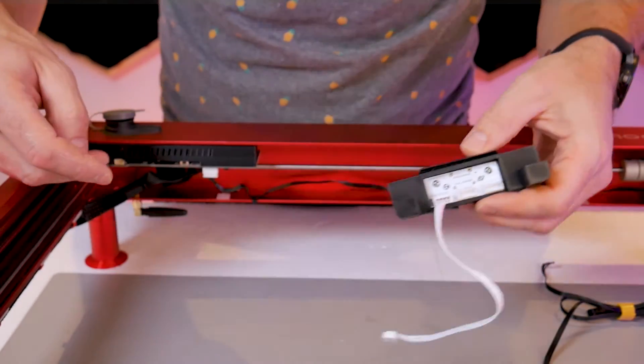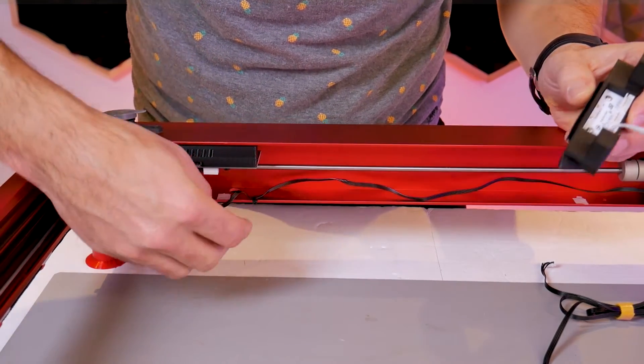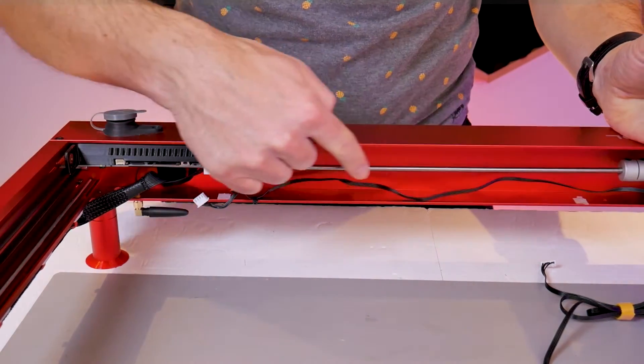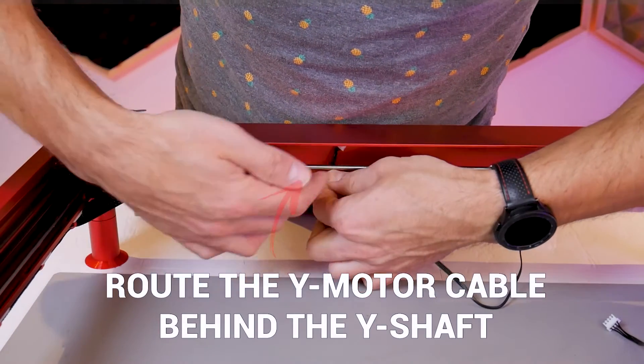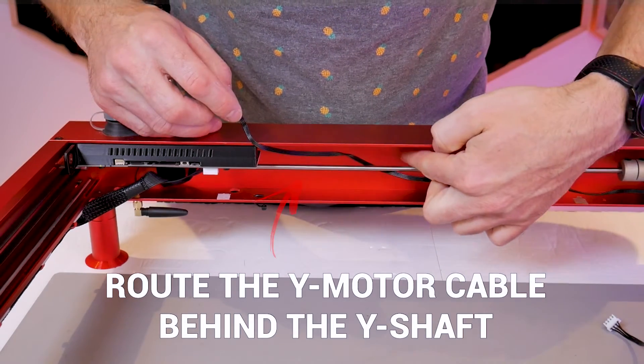Now we can unplug the Y motor connector from the main board for the very last time. When you're unplugging and plugging these cables and even when operating the rotary switch in the future, you should be doing this with the machine off. Do not do this with the power on.